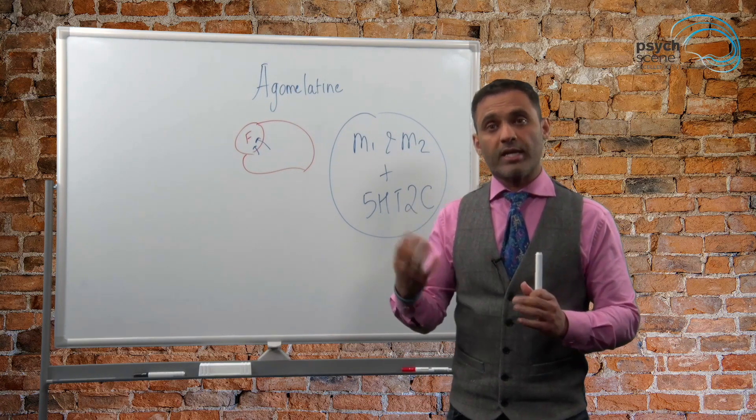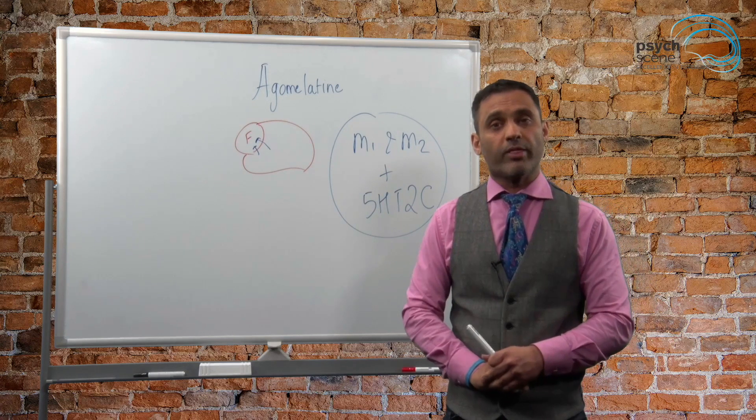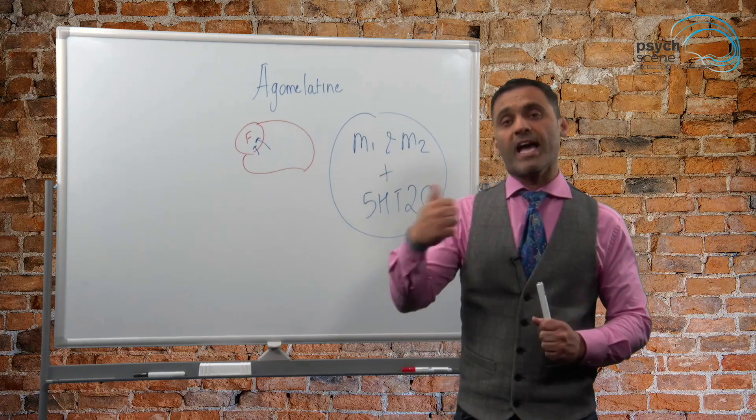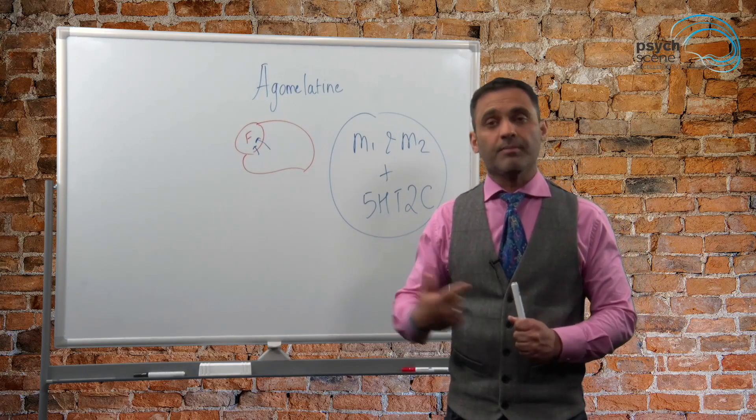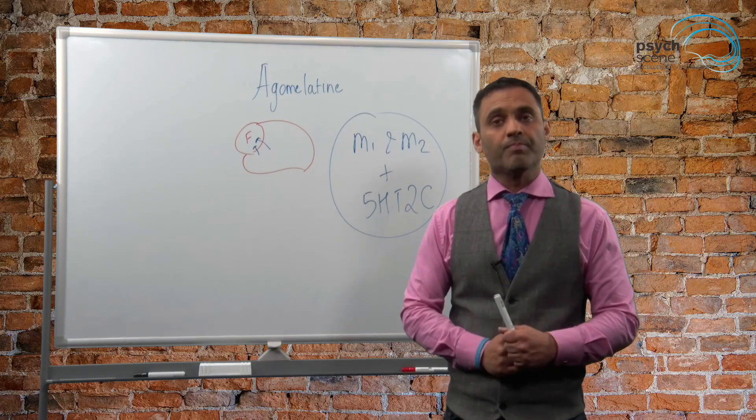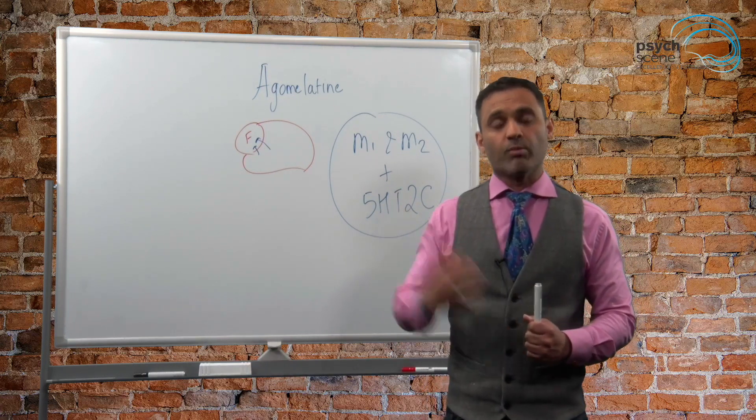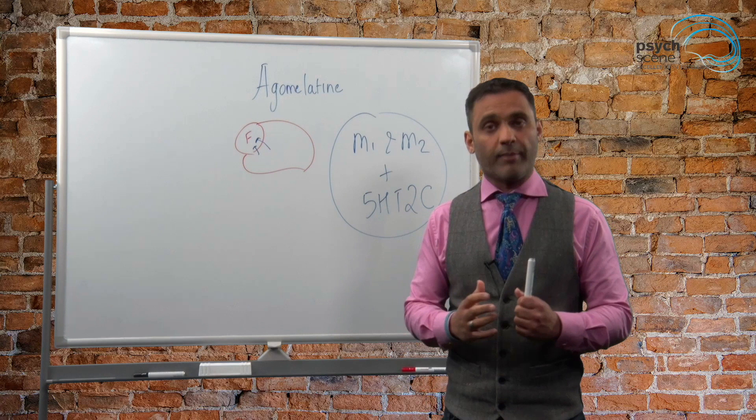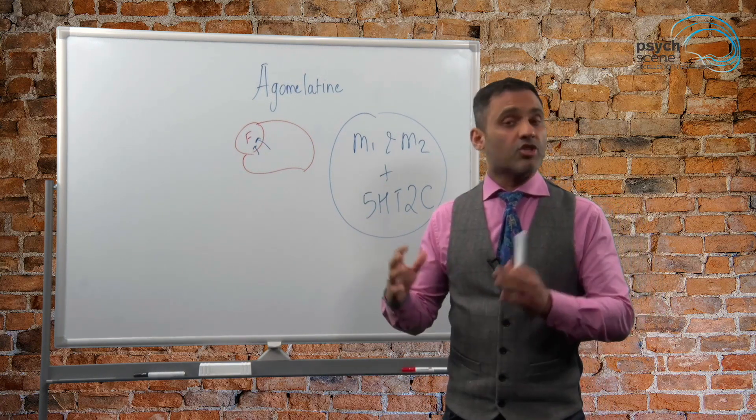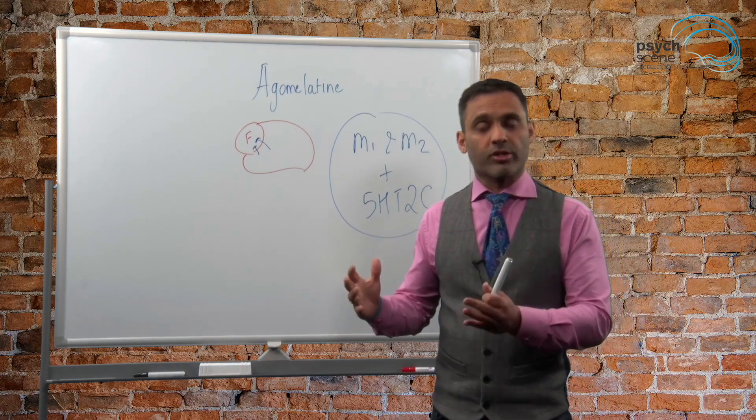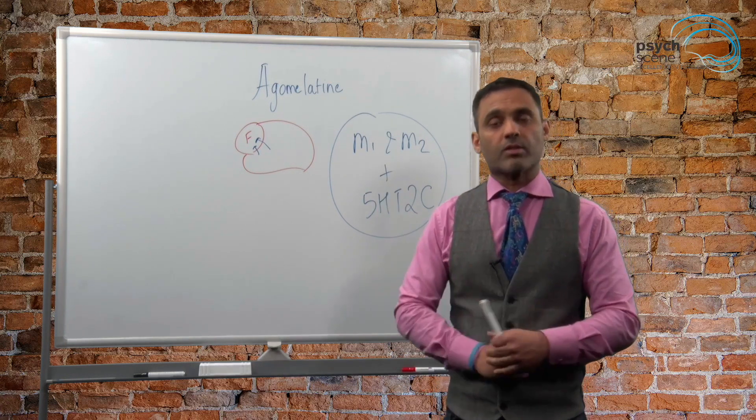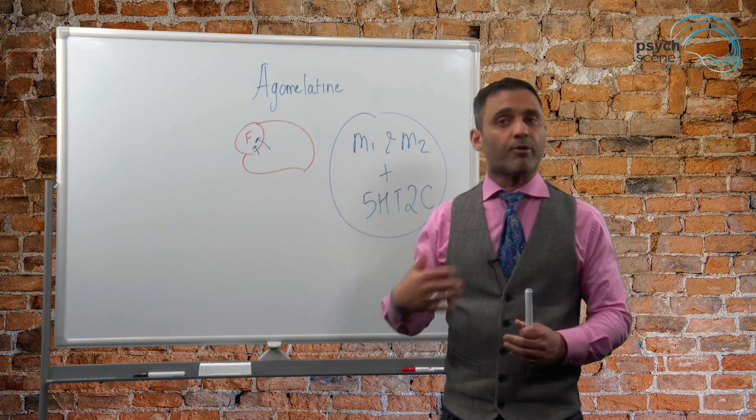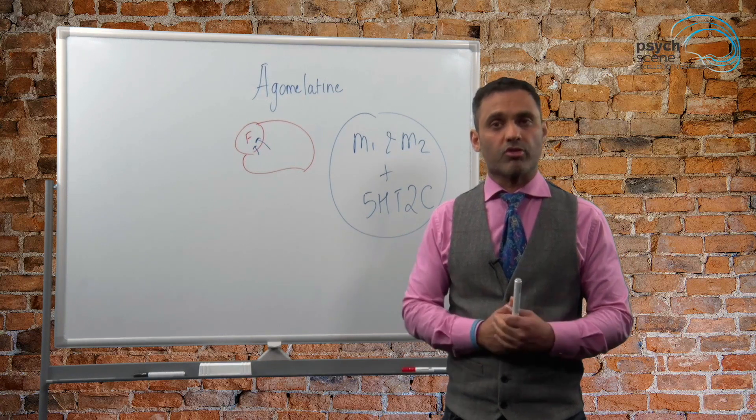The fourth really important one is it is not associated with a withdrawal syndrome. We know SSRIs and SNRIs are notorious with regards to withdrawal syndromes. Again, we've done a video on this as well. Agomelotine is not associated with a withdrawal syndrome and therefore has lower risk when it comes to tapering and withdrawal effects.